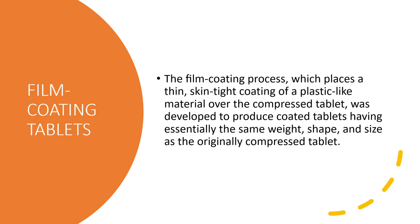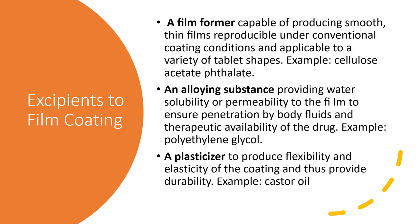Next, you have your film coated tablets. In the film coating process, you place a thin, skin-tight coating of a plastic-like material over the compressed tablets, producing tablets with essentially the same weight, since film coating is so thin it produces negligible additions in weight. We have different excipients for film coating: the film-former, which is the primary material — it could be cellulose acetate phthalate. You have your alloying substance, which provides water solubility and permeability — important because if you form a film that is not soluble to water, the tablet will not dissolve and would be excreted as a solid tablet. You also have a plasticizer, whose role is to add flexibility to your film so that it doesn't crack.